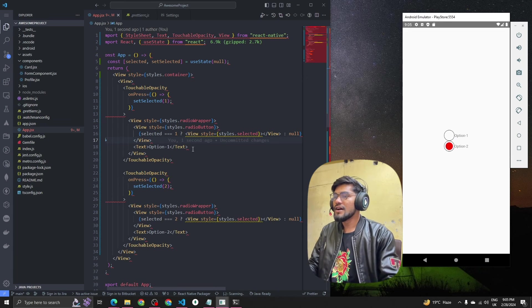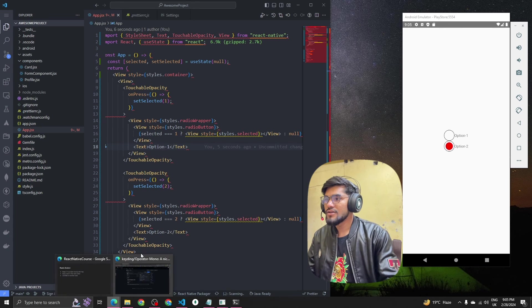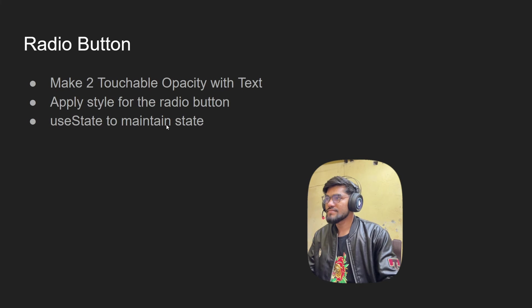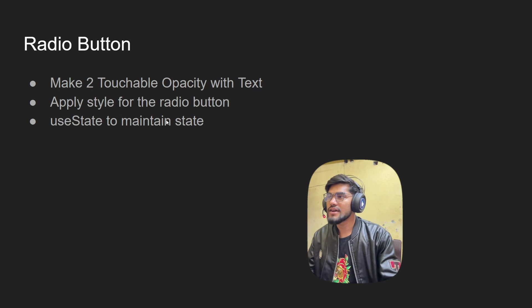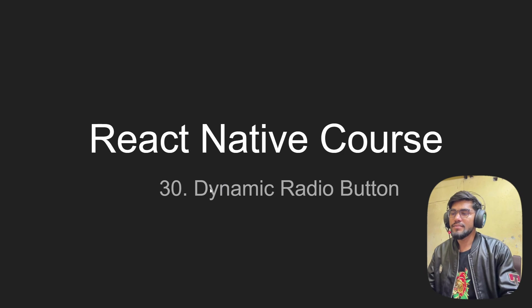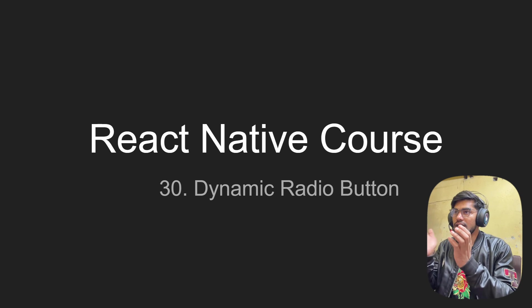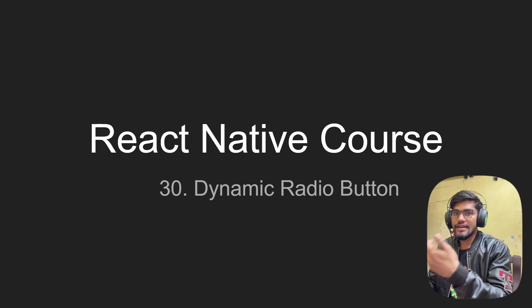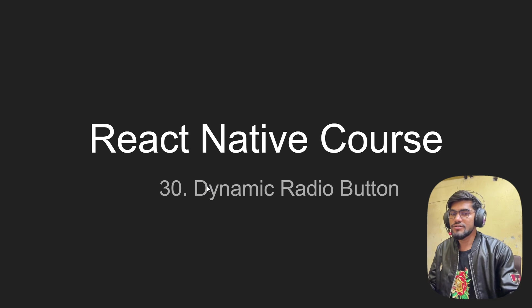Let's click on Option One — awesome! You can see this is how we can build a custom radio button in React Native. You can try building a checkbox and other components similarly. In the next video we're going to talk about dynamic radio buttons — we'll create an array and loop through it to render the radio buttons dynamically. Thanks guys, see you in the next video!